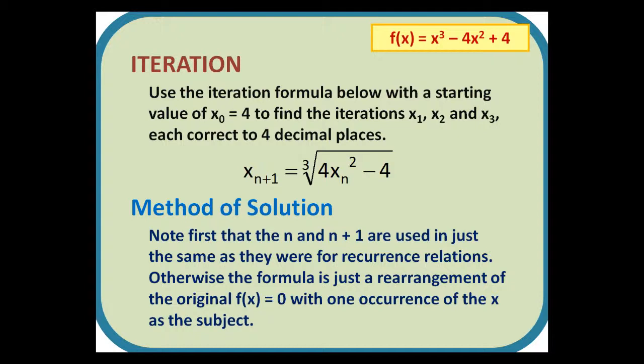Method of solution. Note first that the n and n plus 1 are used in just the same way as they were for recurrence relations. Otherwise, the formula is just a rearrangement of the original f(x) equals 0, with one occurrence of the x as the subject.